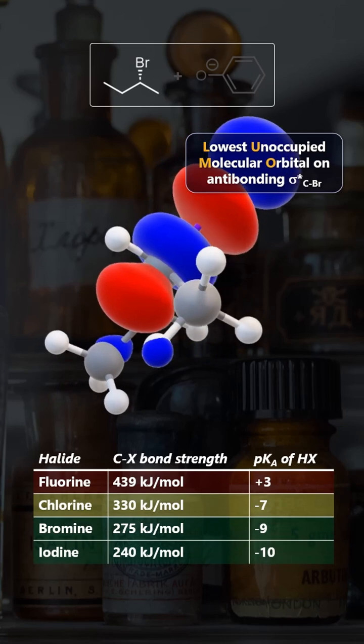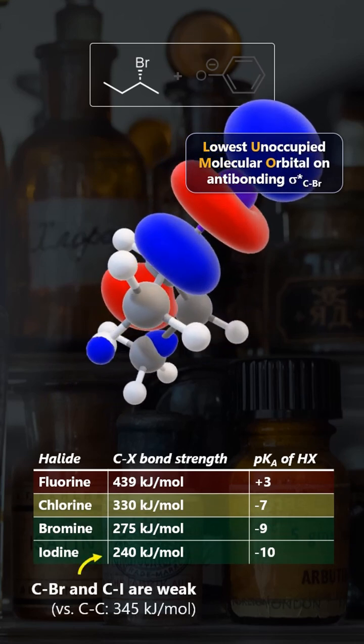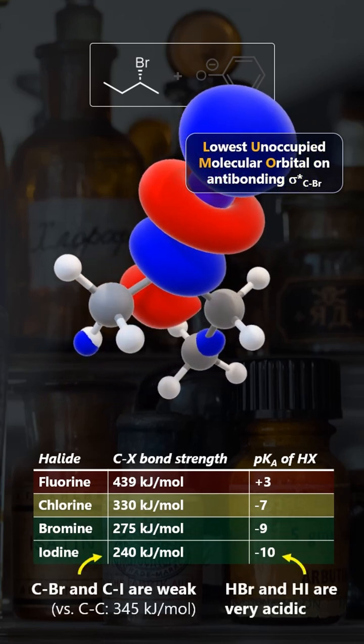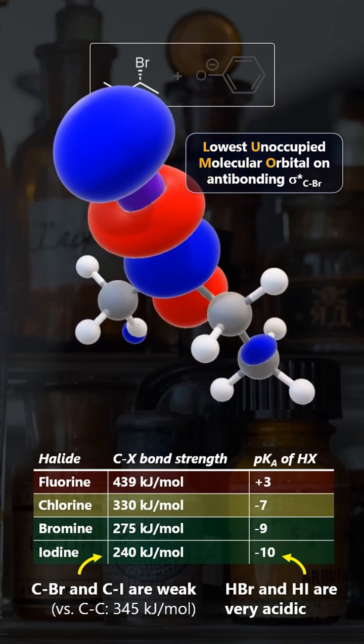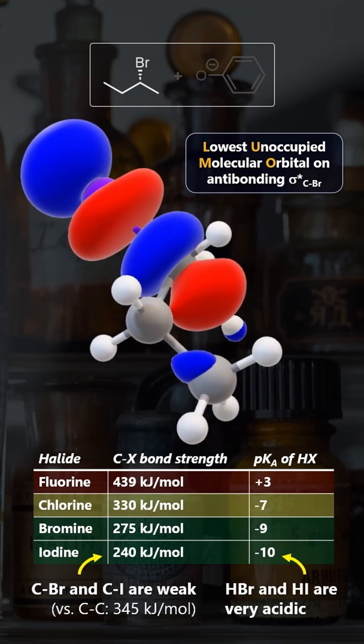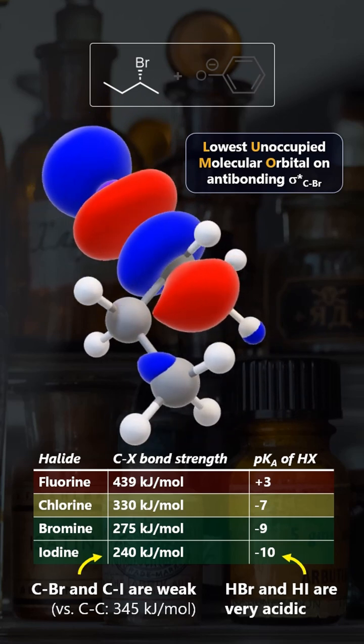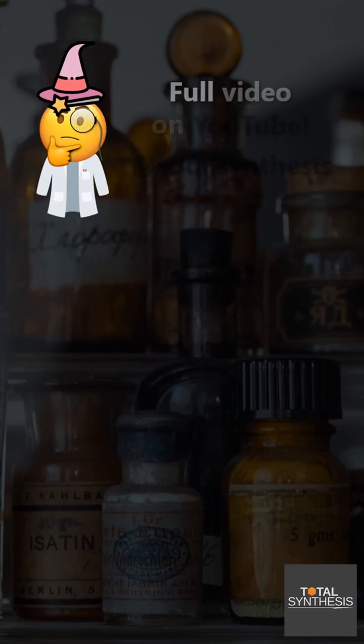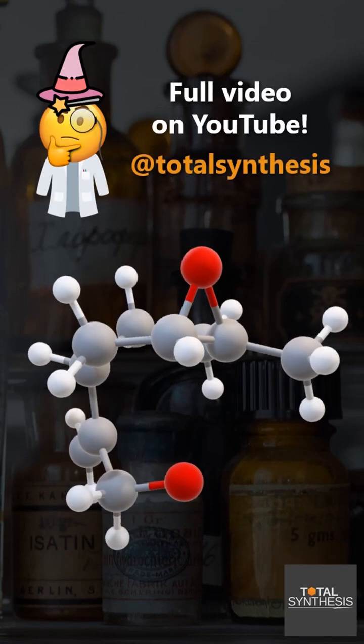Note that bromide and iodide are particularly potent leaving groups due to the high acidity of their conjugate acids but also weak bonds with carbon. This is caused by weak overlap of atomic orbitals and inversely results in a low energy sigma star that is accessible to our nucleophile of the phenylate.